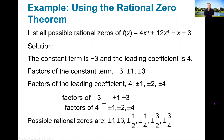Looking at an example here: if I ask you to use the rational zero theorem to tell me what all the possible rational zeros are of any polynomial. The polynomial I'm showing you here is f(x) = 4x⁵ + 12x⁴ - x - 3. As long as your polynomial is written in descending order, the manner in which you find the possible rational zeros is always the same. All you're going to do is look for positive and negative factors of the constant divided by the leading coefficient.